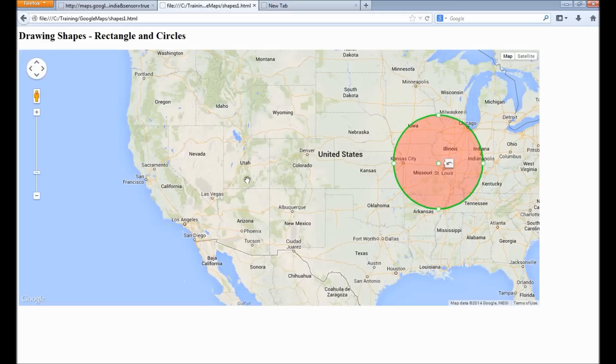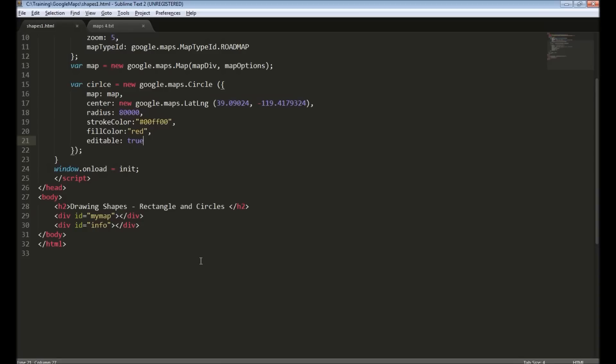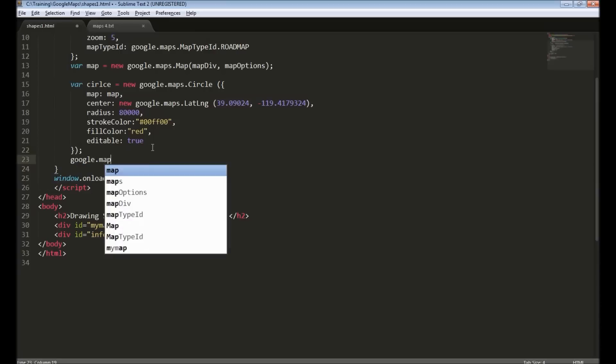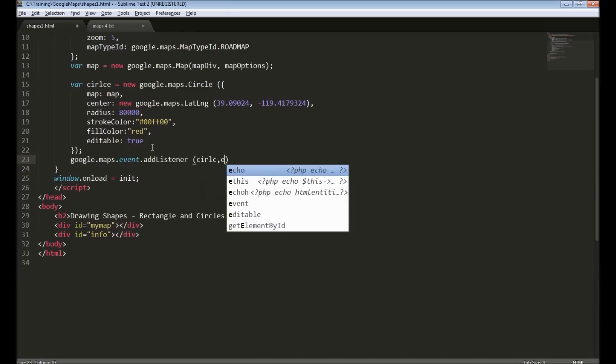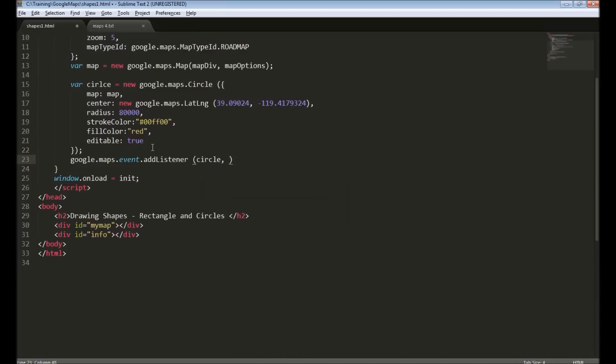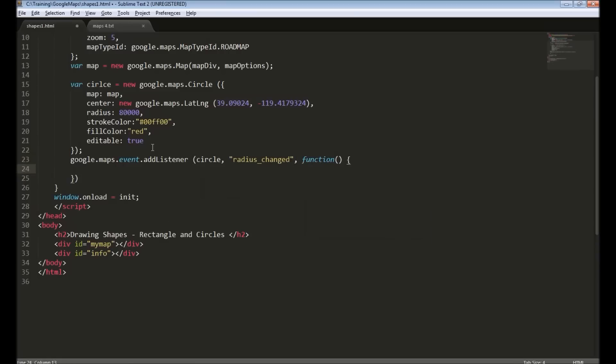When circle is moved around or resized, there are events we can listen to. There are two events in circle. The first is radius_changed. We need to specify the circle object and the event name, and provide the function that needs to be called.